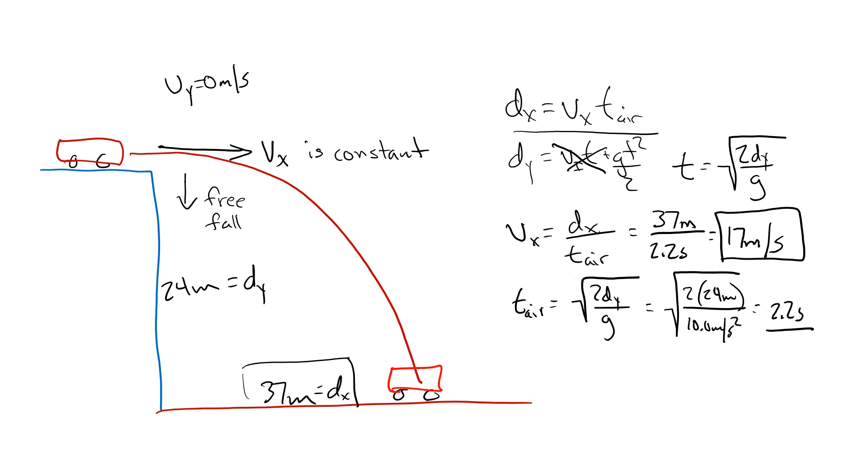So now you'll notice here t_air, the time it takes for anything to fall, just like we did with free fall, it's not going to care about how fast it's moving horizontally. This d_x and v_x do not affect how long we're going to be in the air. What's going to affect and determine how long it takes to fall is simply d_y. And d_y is equal to the height, so the height is what determines time to hit the ground.